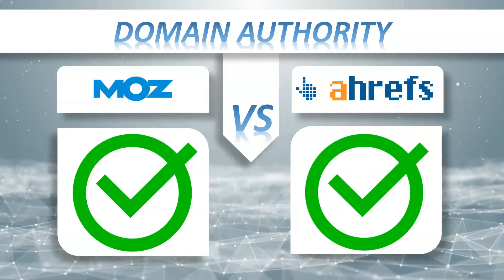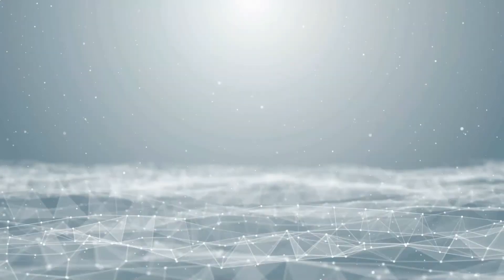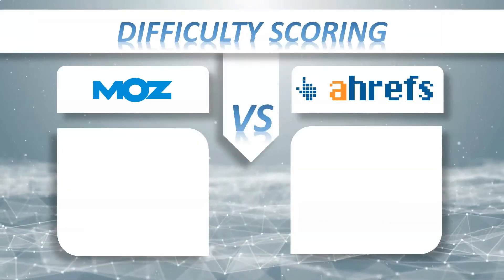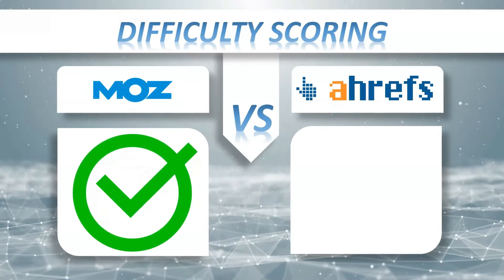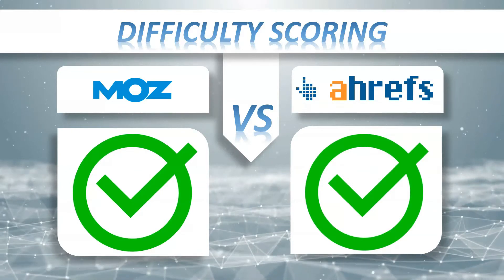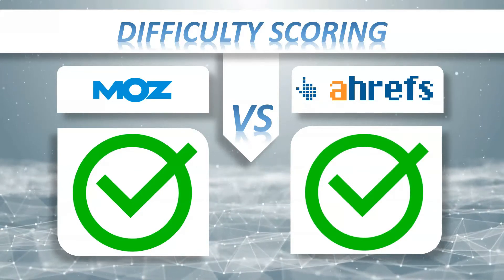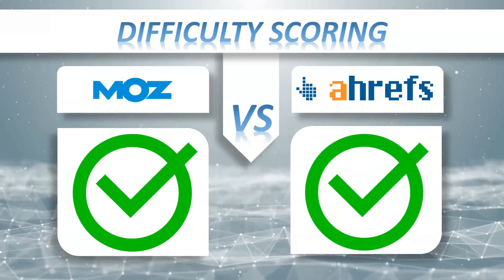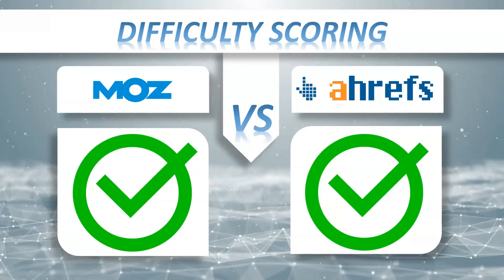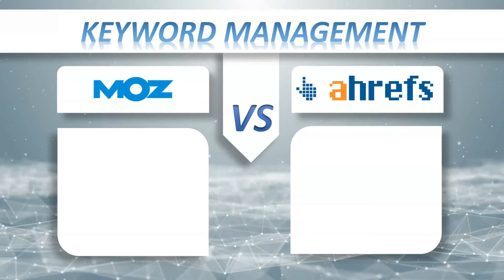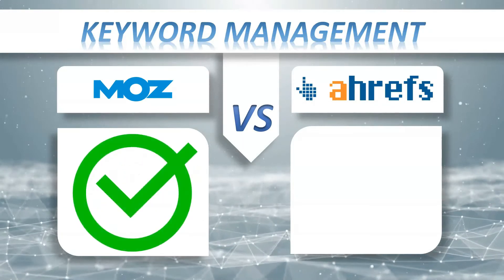Keyword Difficulty Scoring: Moz Pro — yes, Ahrefs — yes. Keyword difficulty estimates how hard it would be to use SEO on a new web page to hypothetically outrank the pages currently ranking on the first two pages of Google. Keyword Management: Moz Pro has it, Ahrefs also has it.